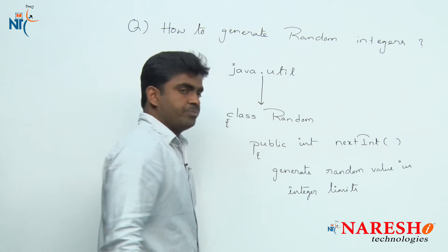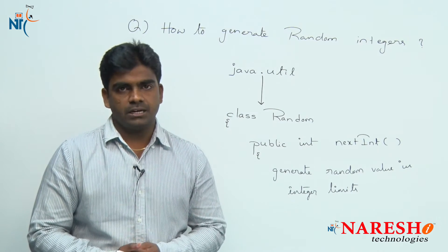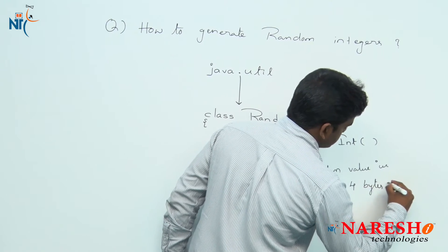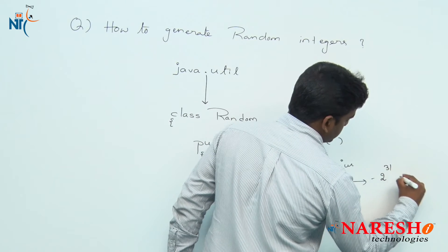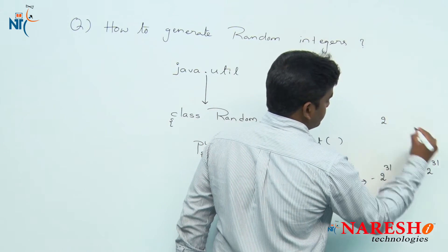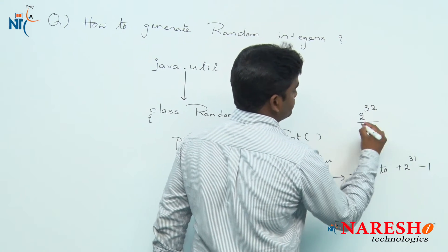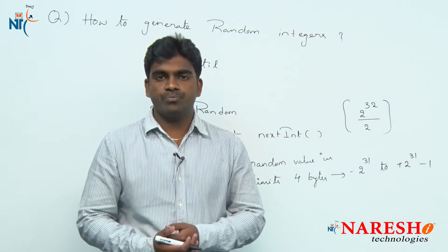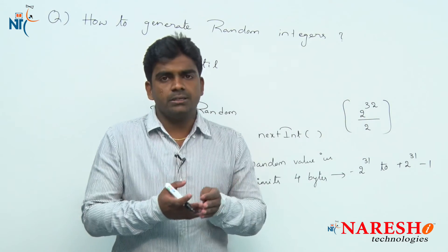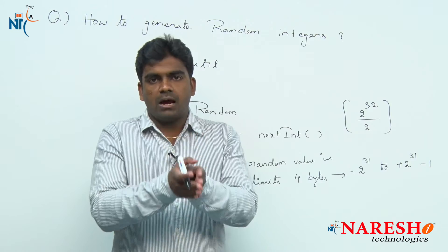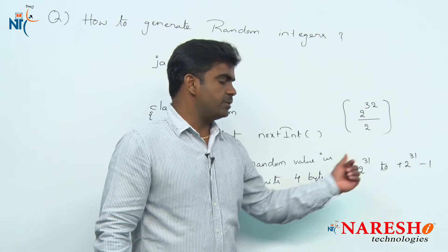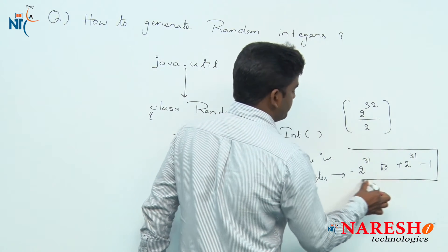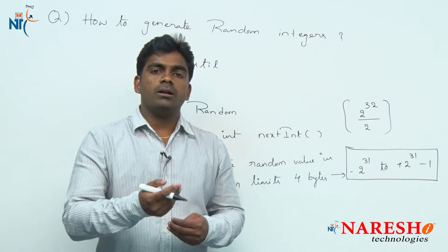What are those integer limits? The size of an integer is 4 bytes in Java, which means 32 bits. The 4-byte limit is from minus 2 to the power 31 to plus 2 to the power 31. The total is 2 to the power 32 values. Half is for negative values and half is for positive values. So within this range, it can generate either a positive or a negative integer.